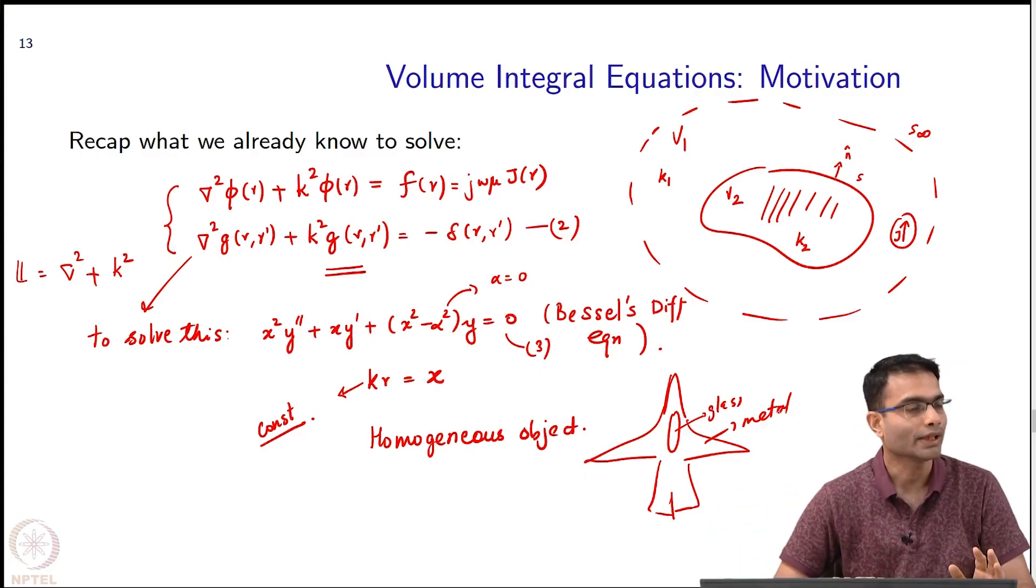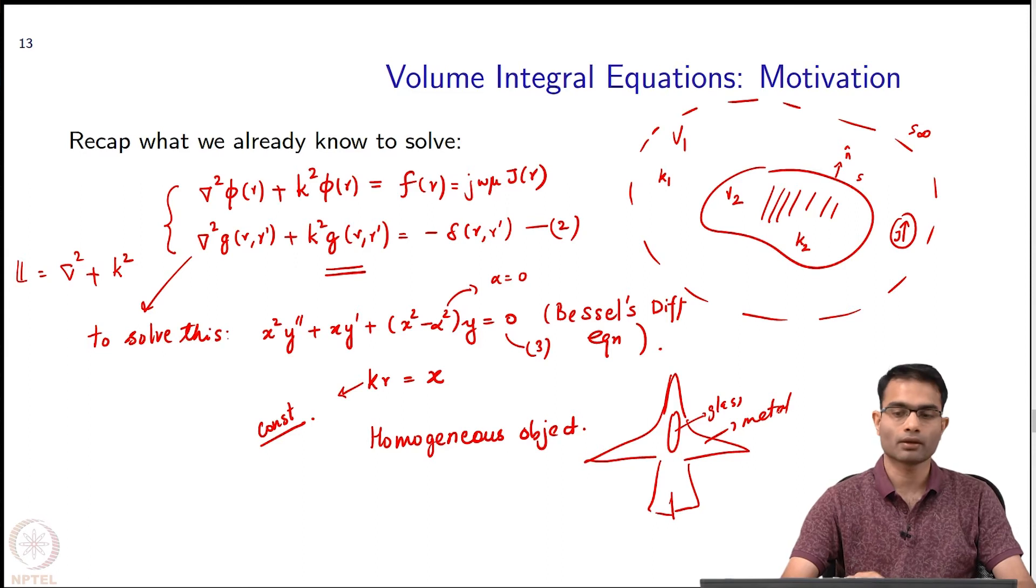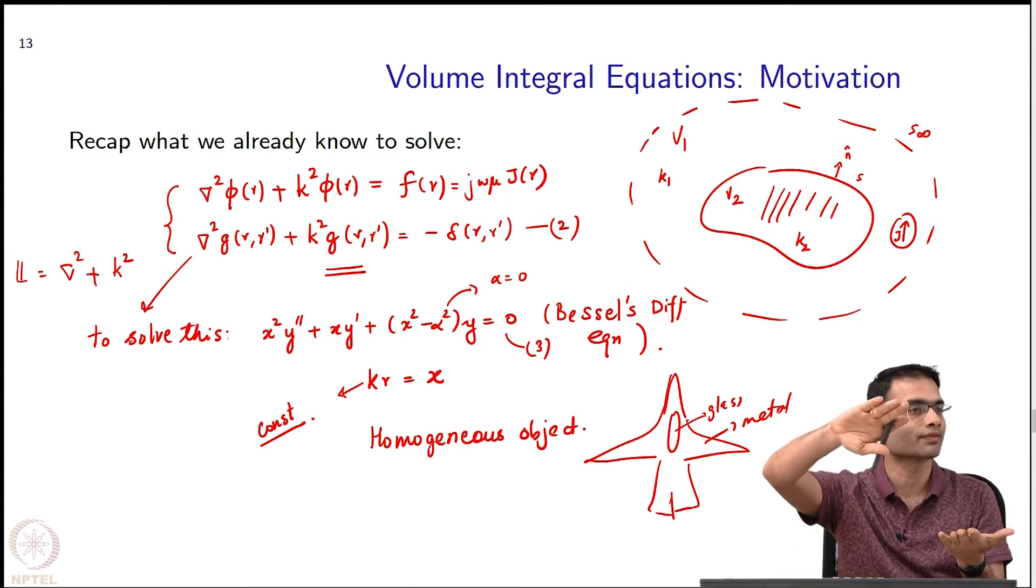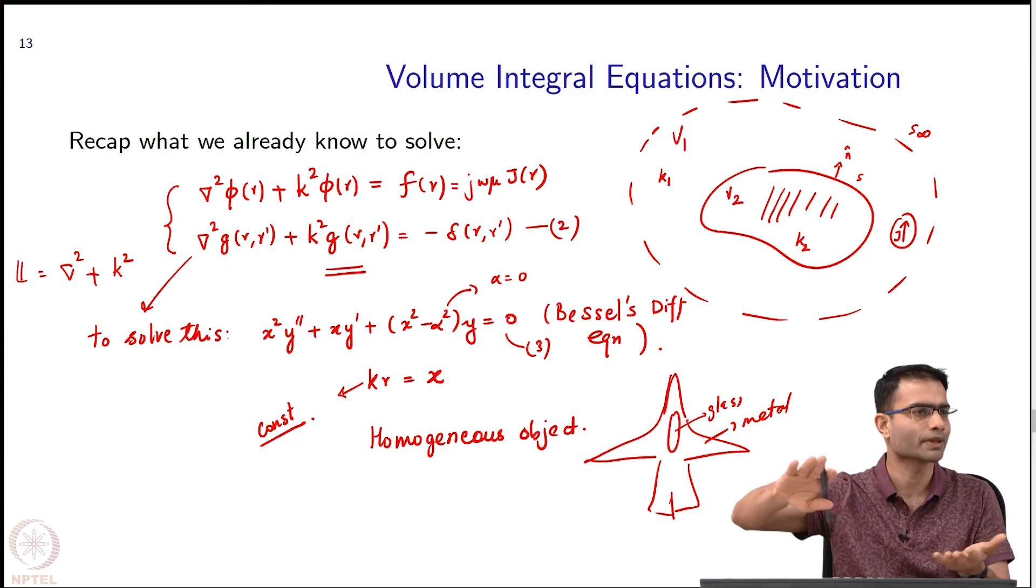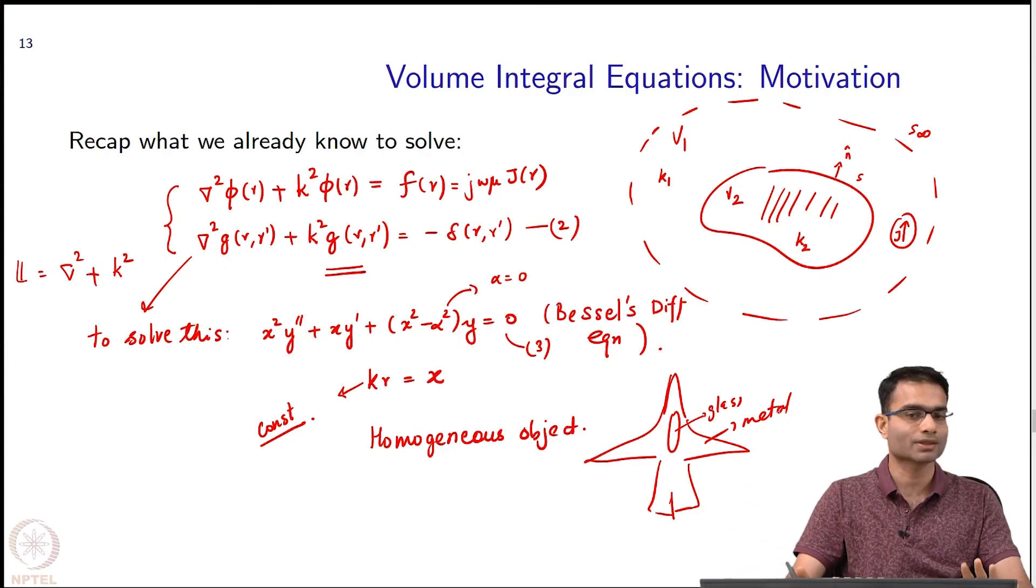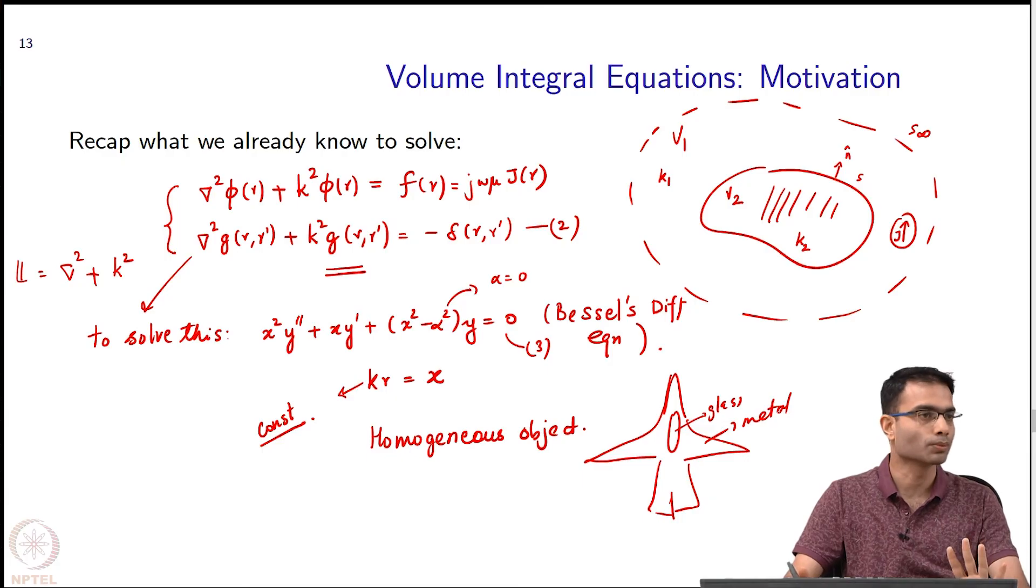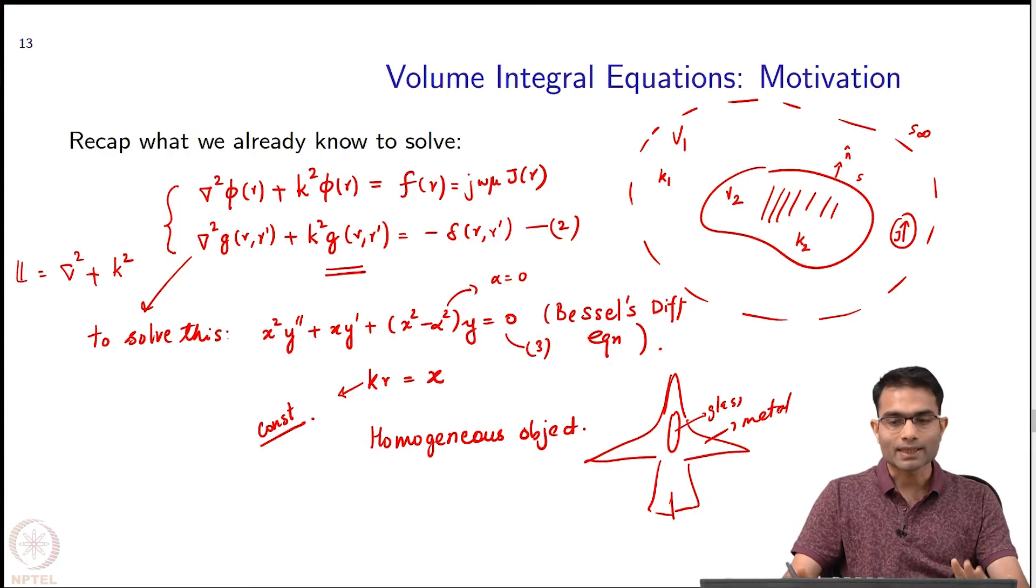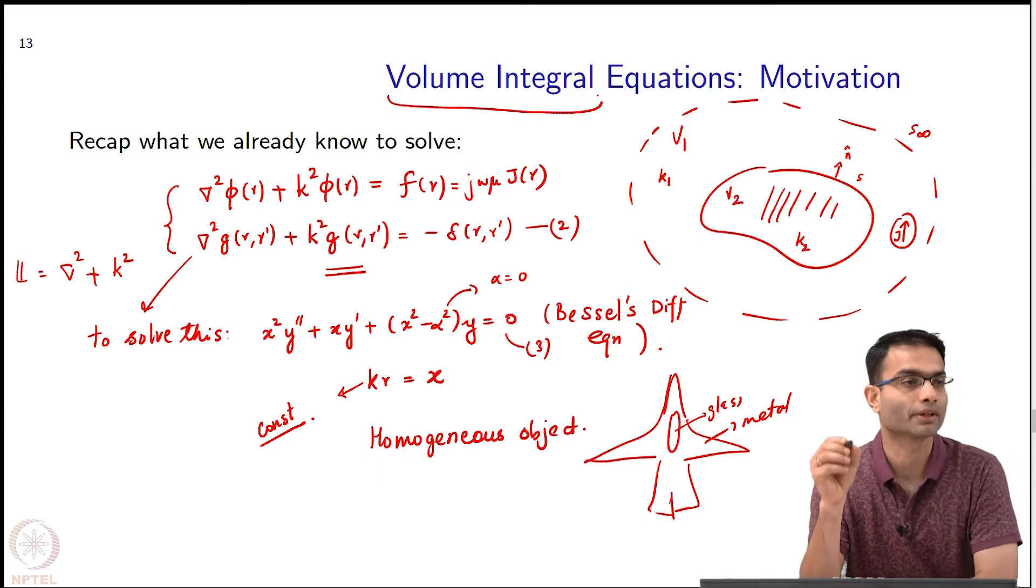But that will break down if for example my material has some continuous variation in refractive index, permittivity, whatever you want to call it. If an object is truly heterogeneous then this approach we can see it is doomed to fail. That is where this other approach comes which is volume integral.